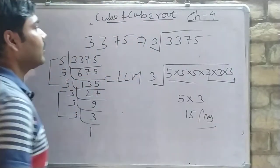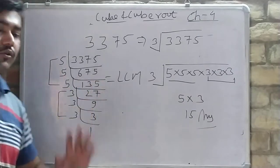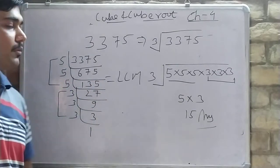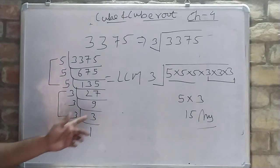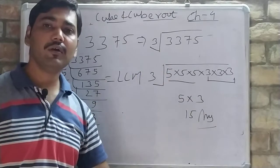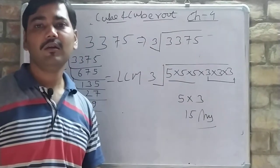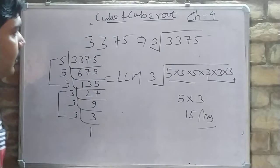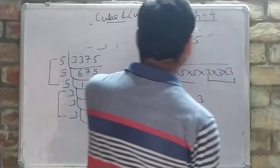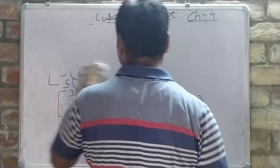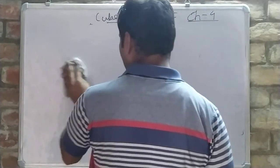So the cube root of 3375 is 15. This is the way of solving cube root: take the LCM, form triplets, and the answer is the product of the numbers that form triplets.